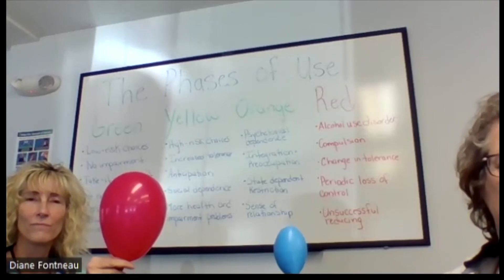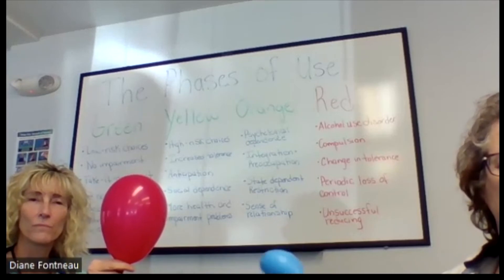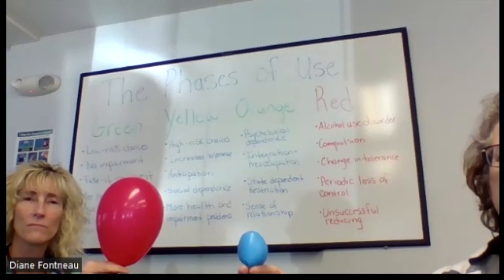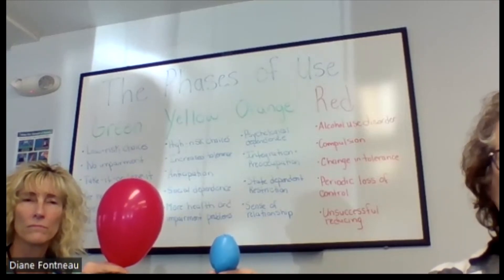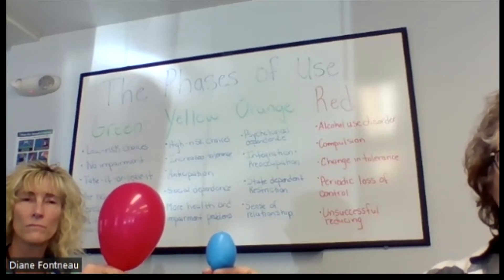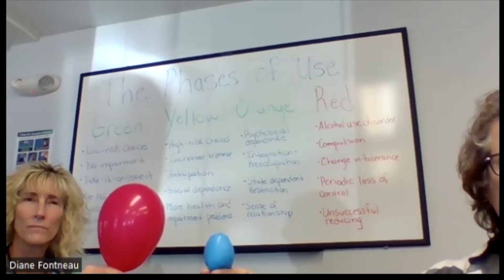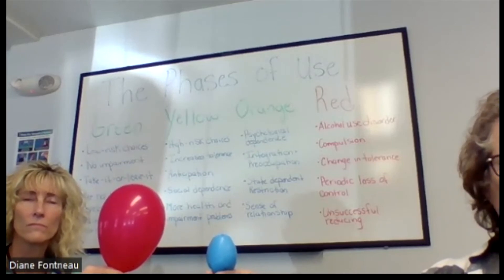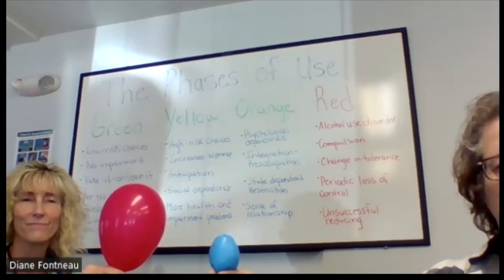The good news we're here to tell you is that if you, yourself, a loved one, or anyone you know is in this stage — where they seem to be not making clear rational decisions, choosing alcohol in every or many situations — some families and friends feel like they choose alcohol over them. Just understand that their brain has been hijacked by an alcohol use disorder that drives the bus and makes decisions for them.